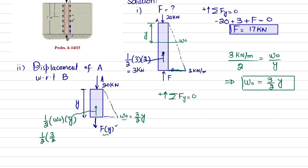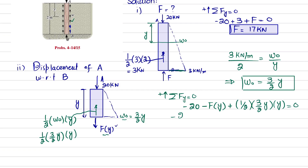Applying the equilibrium condition — sum of forces in y-direction equals zero: minus 20 minus F(y) plus (1/2)·(3/2)·y·y equals zero. So minus 20 minus F(y) plus (3/4)·y² equals zero. Therefore F(y) equals (3/4)·y² minus 20, with units in kilonewtons.